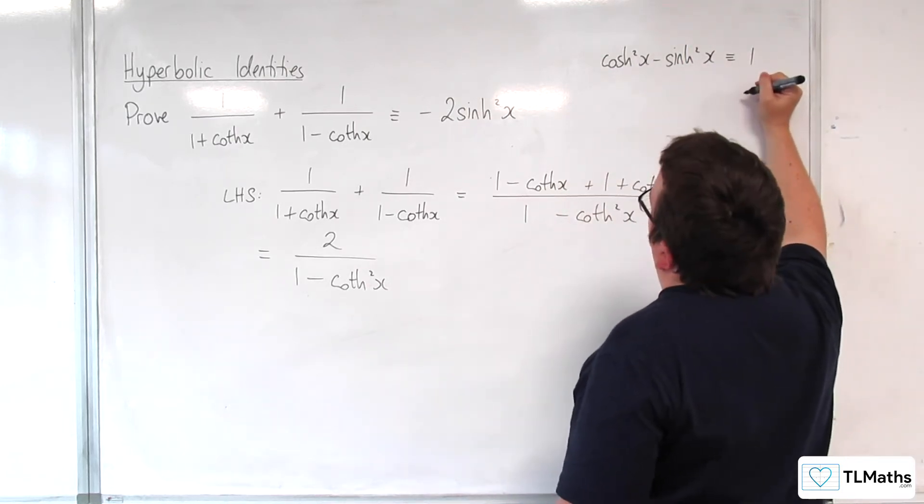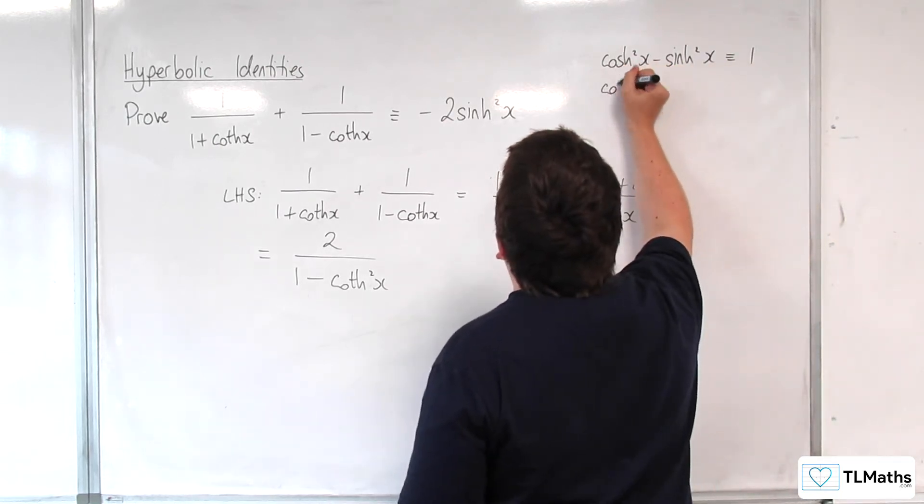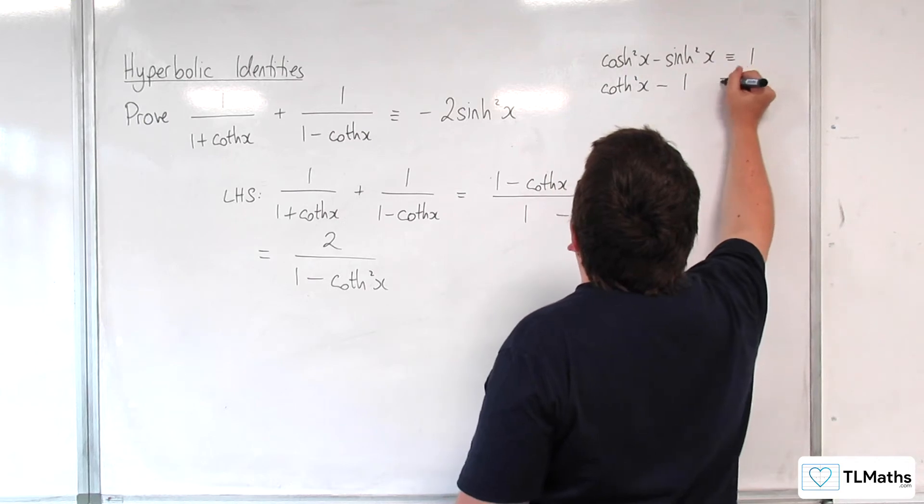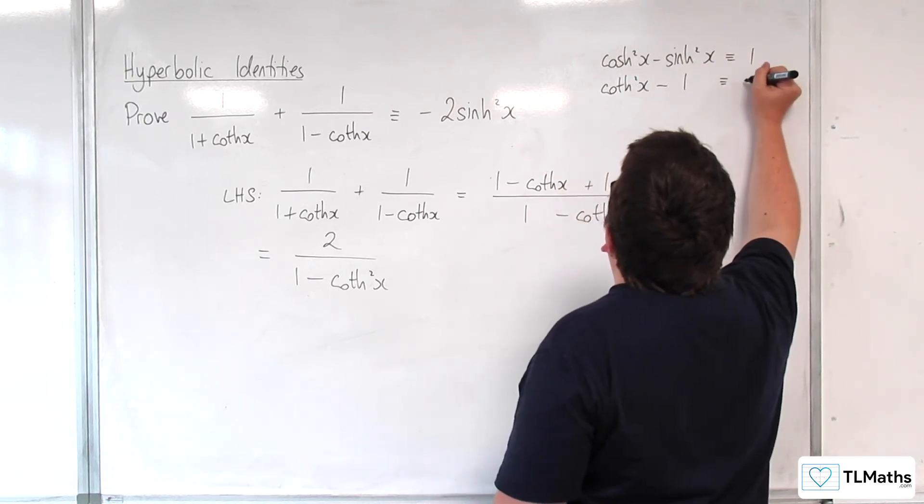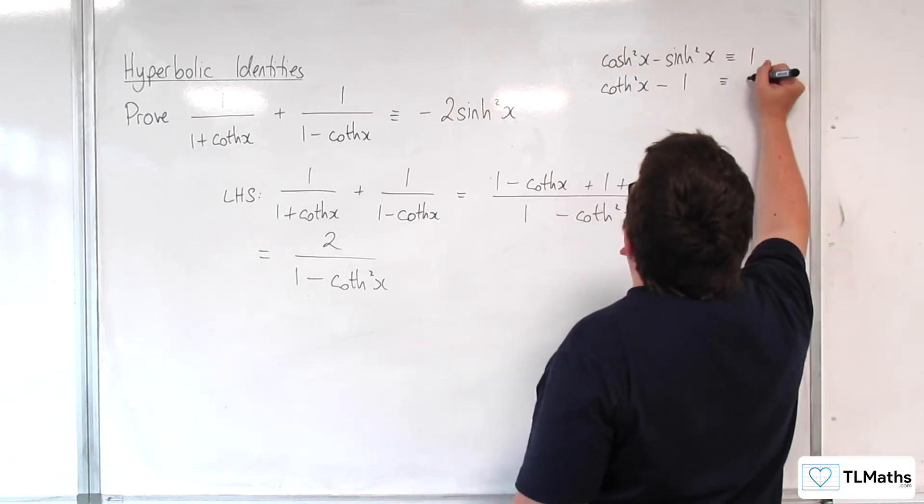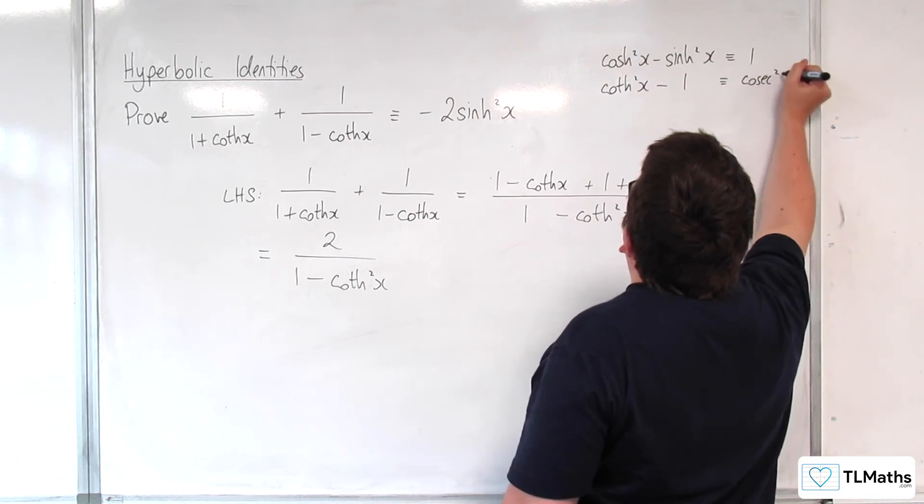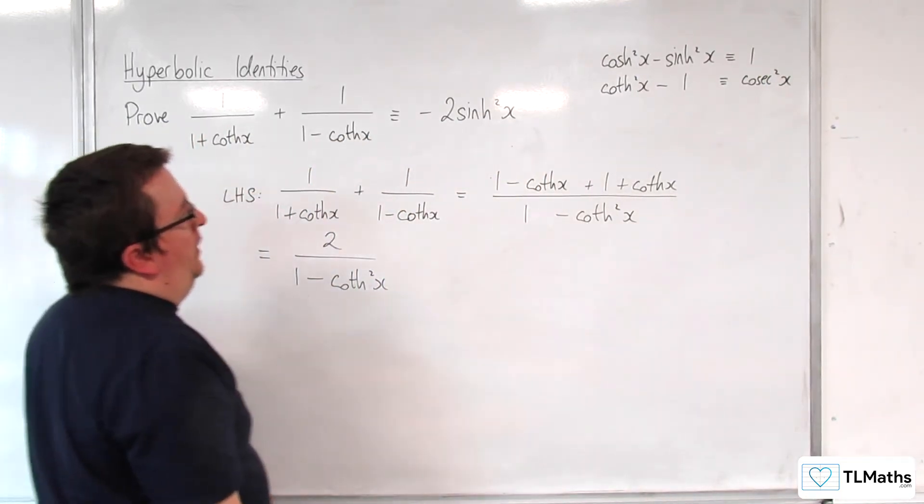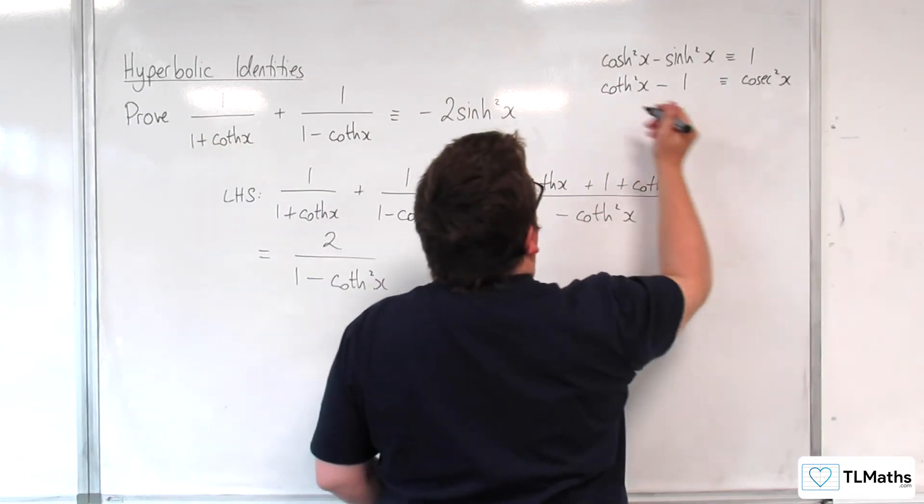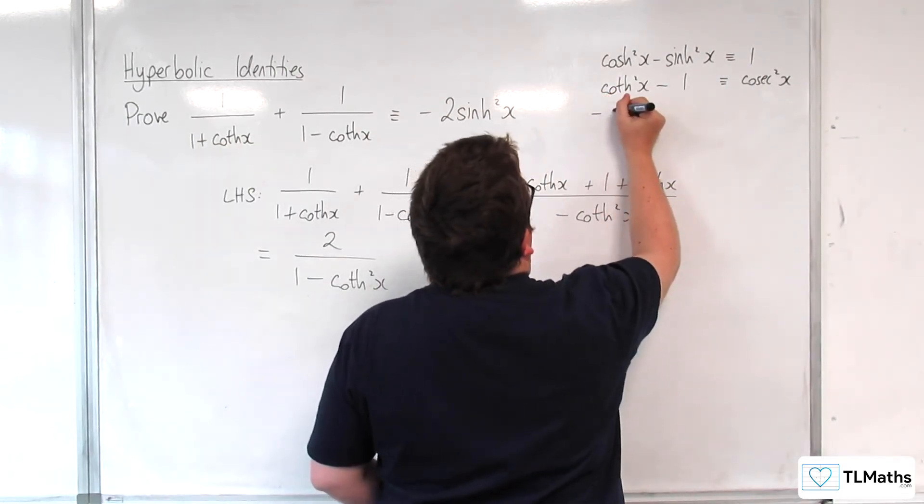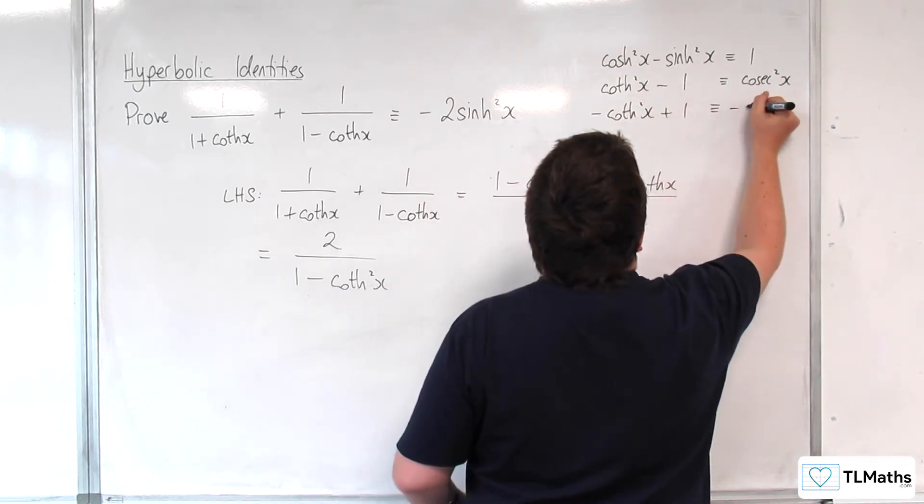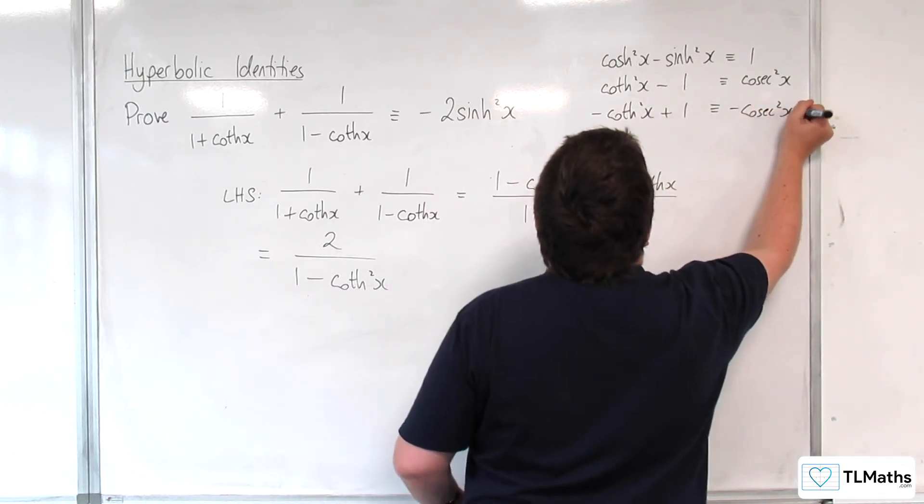If I divide through by sinh squared, I get coth squared x take away 1 is equivalent to dividing through by sinh squared, so cosech squared x. So if I multiply this through by minus 1, I get that.